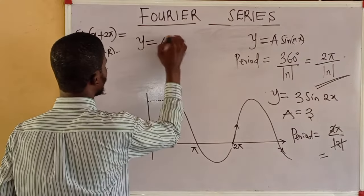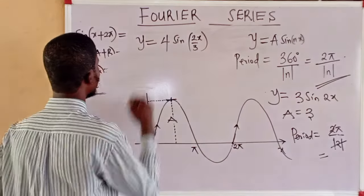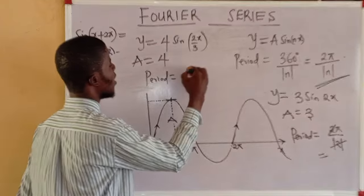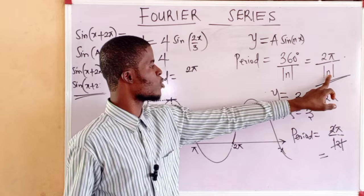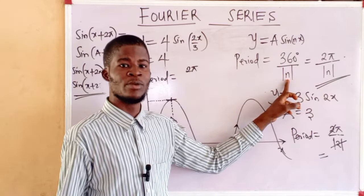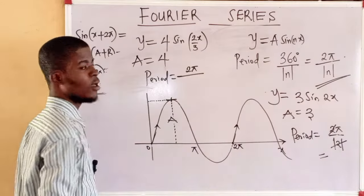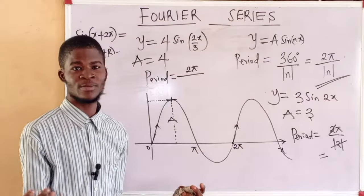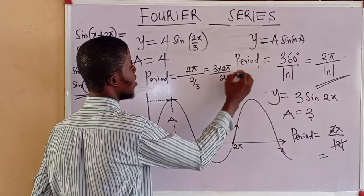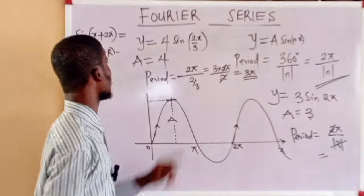What about y = 4sin(2x/3)? The amplitude is 4. For the period using radians: 2π divided by |2/3|. The absolute value of 2/3 is 2/3, so the period = 2π ÷ (2/3) = 3 × 2π / 2 = 3π. So the period of this function is 3π radians and the amplitude is 4.